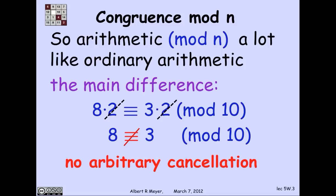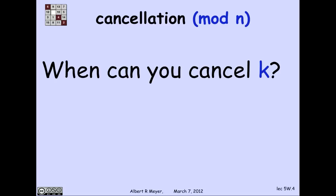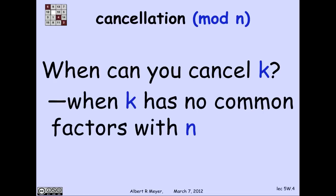So in short, you can't cancel arbitrarily. You can't cancel 2, in this case, in particular. So that leads naturally to the question of when can you cancel a number? When can you cancel a number k when both sides of an inequality are multiplied by k? And the answer is simple. When k has no common factors with the modulus n.